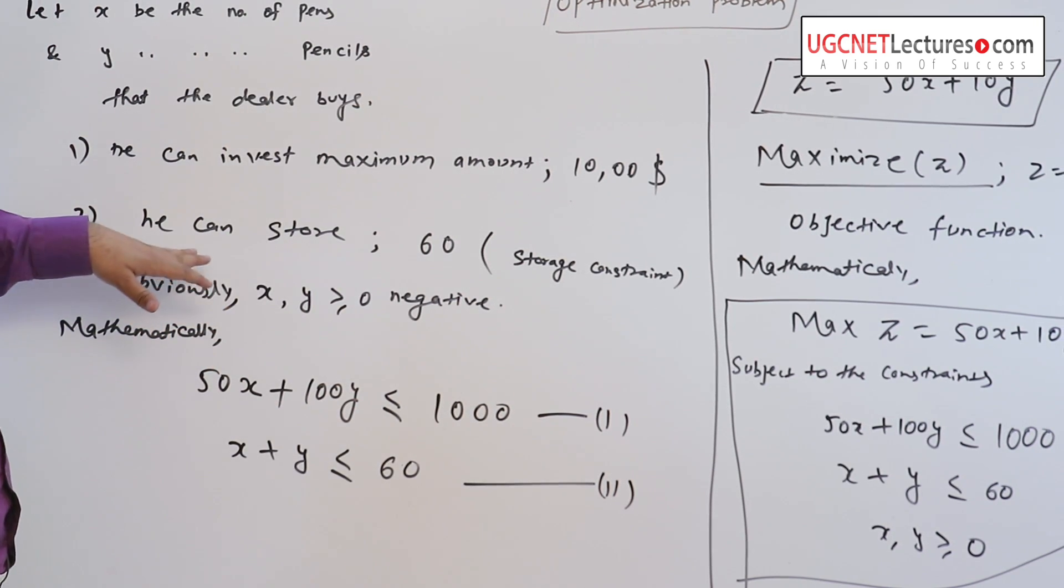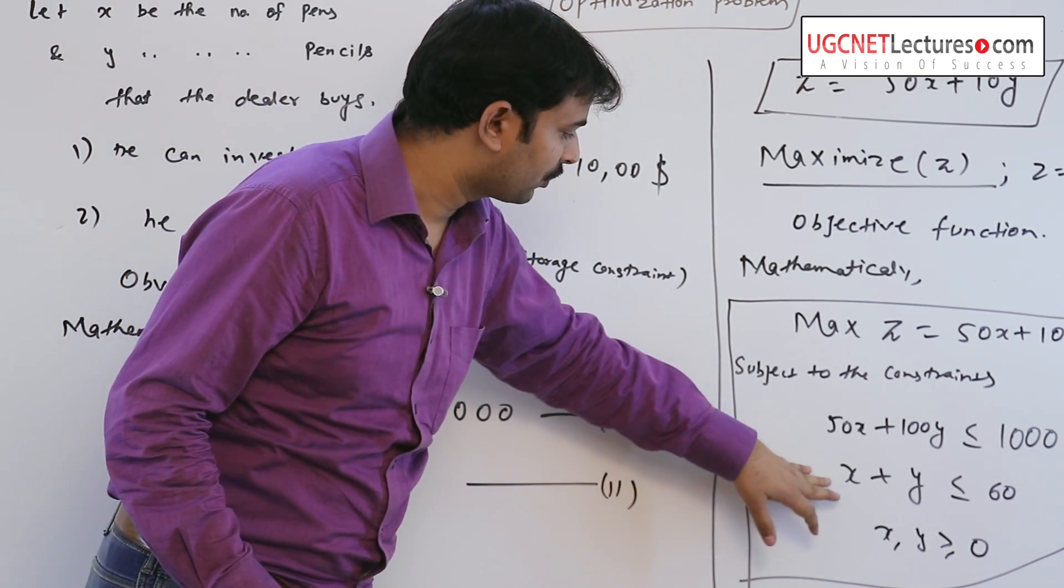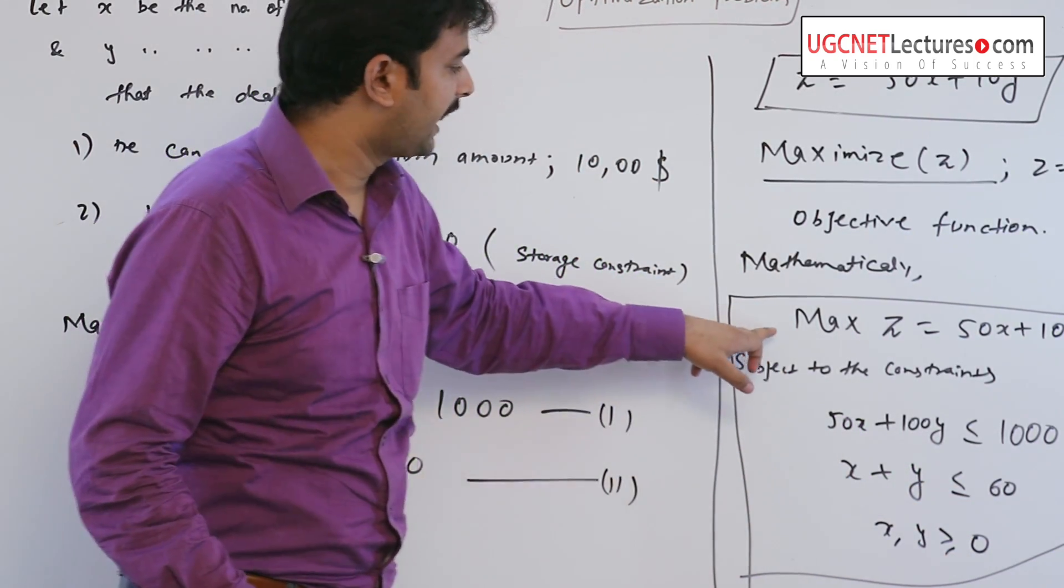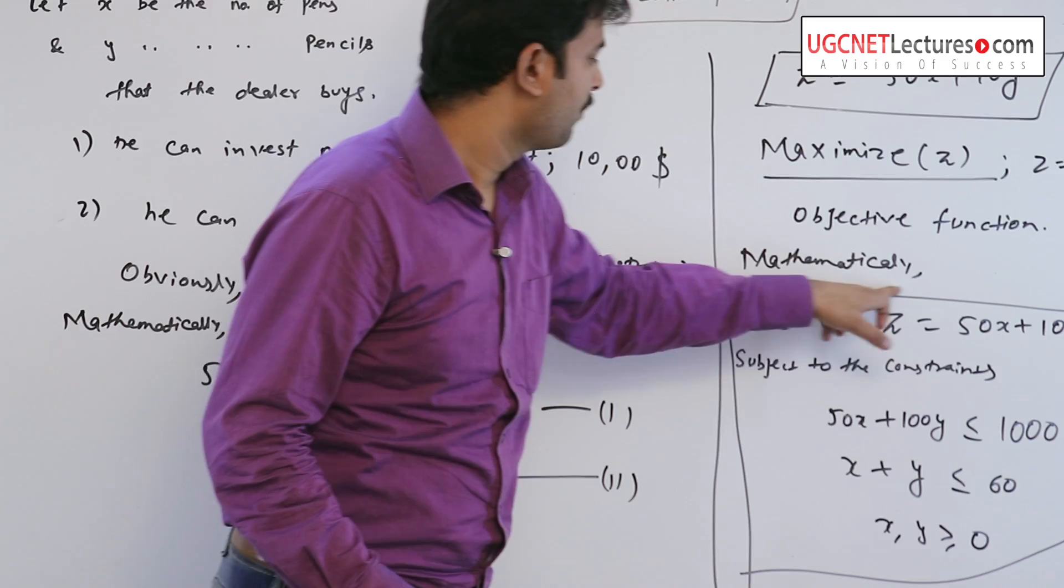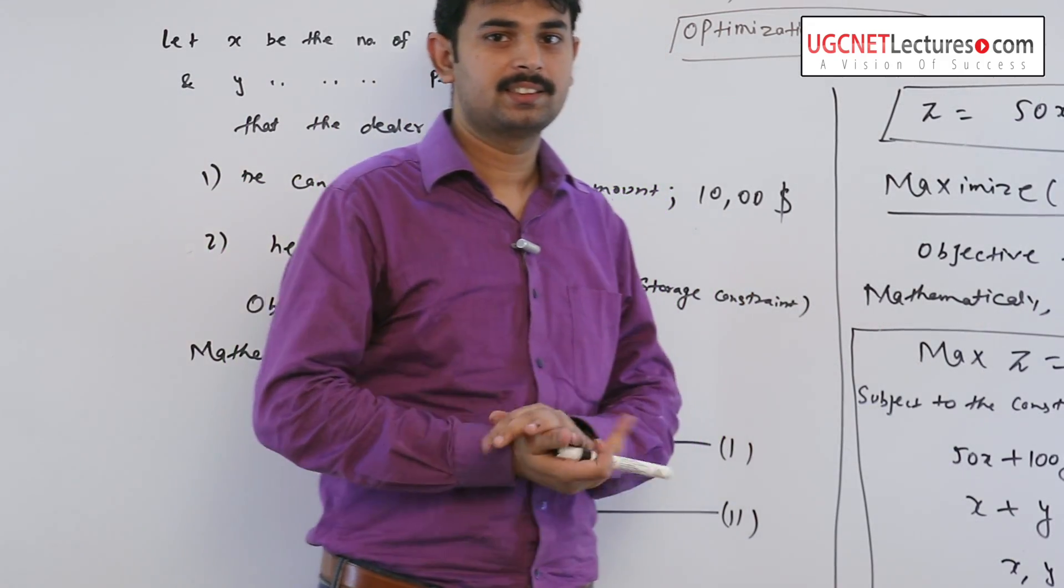The second constraint is he can store 60. The second constraint is x plus y is less than equal to 60 in such a way that he can maximize his profit.